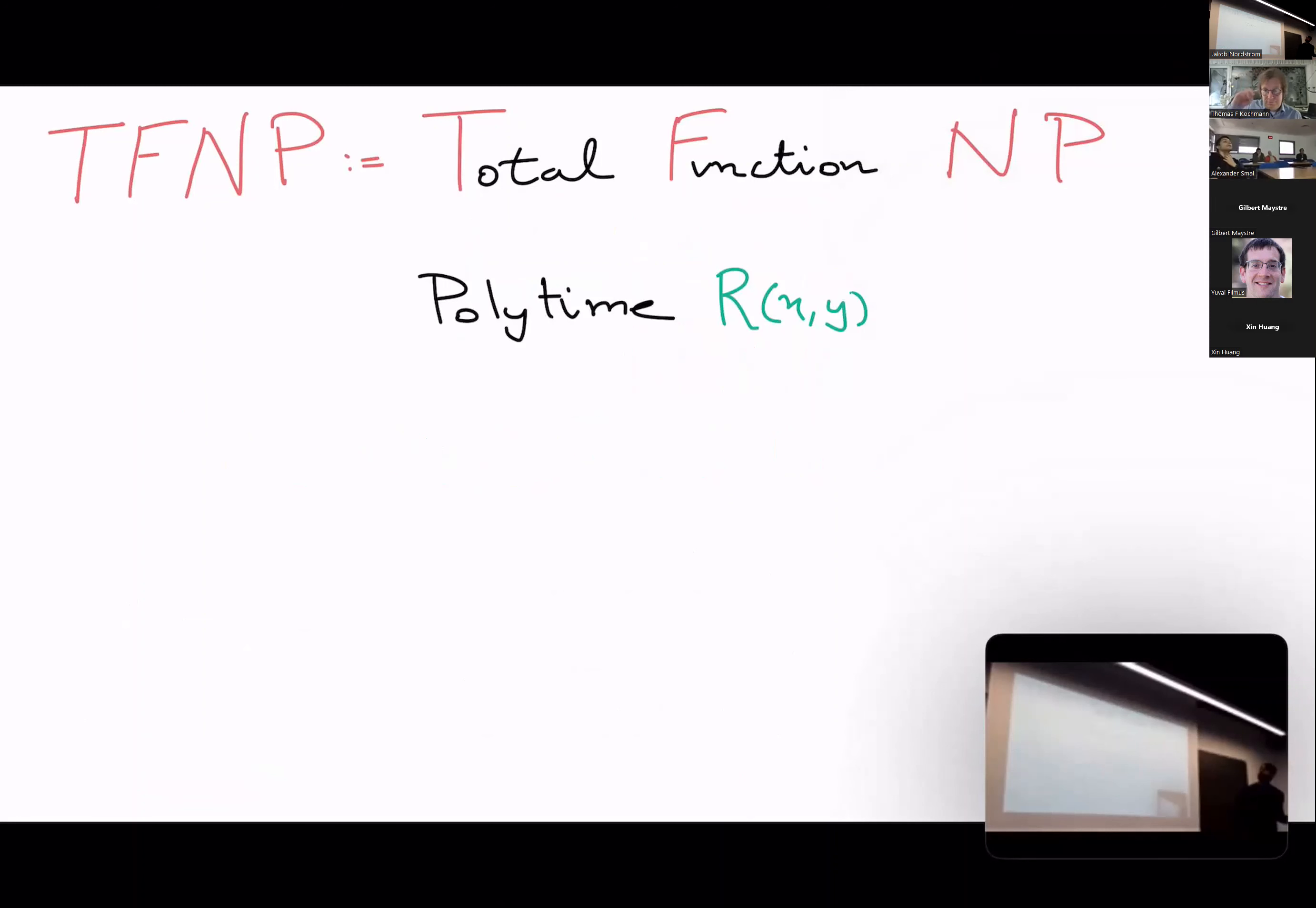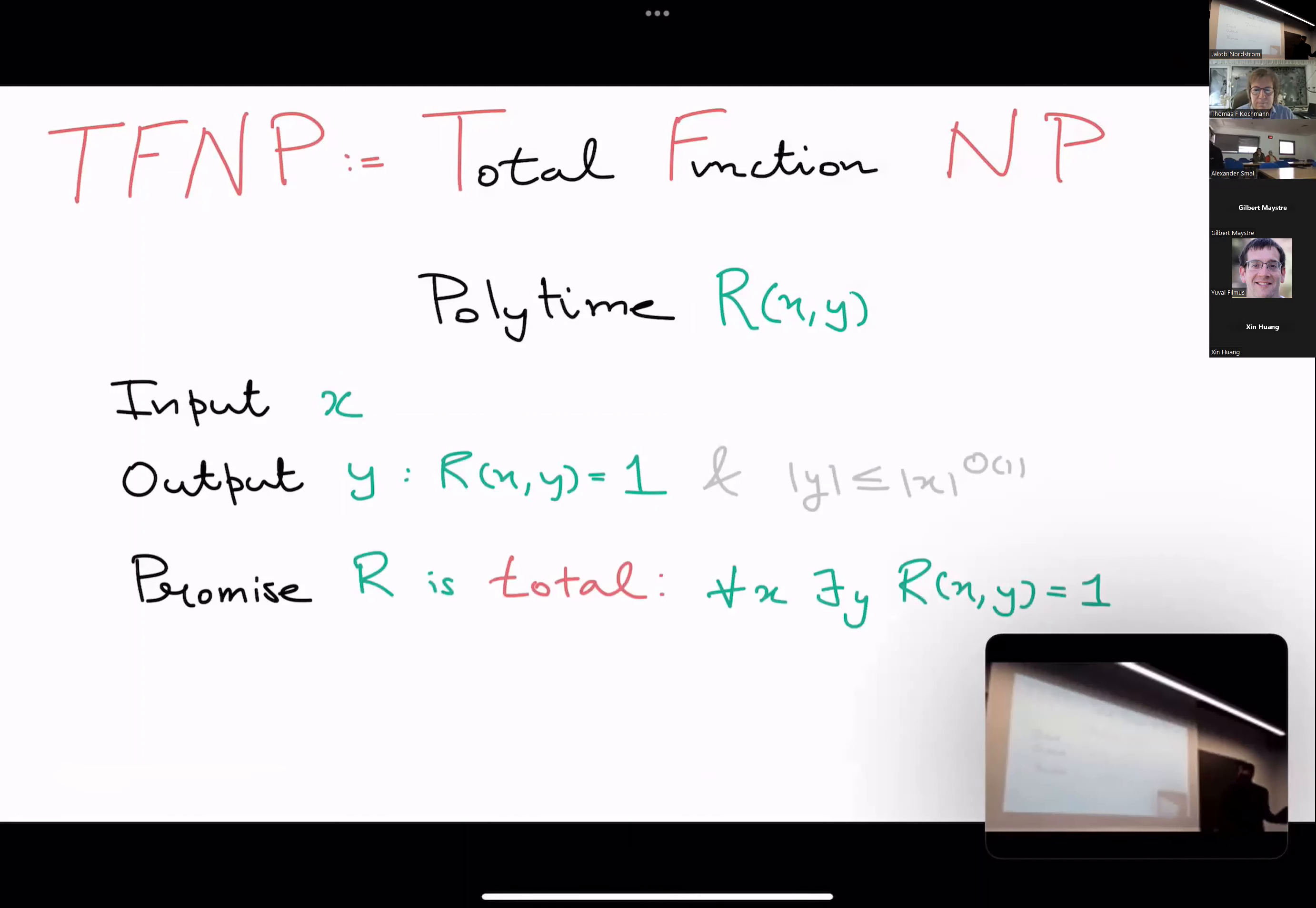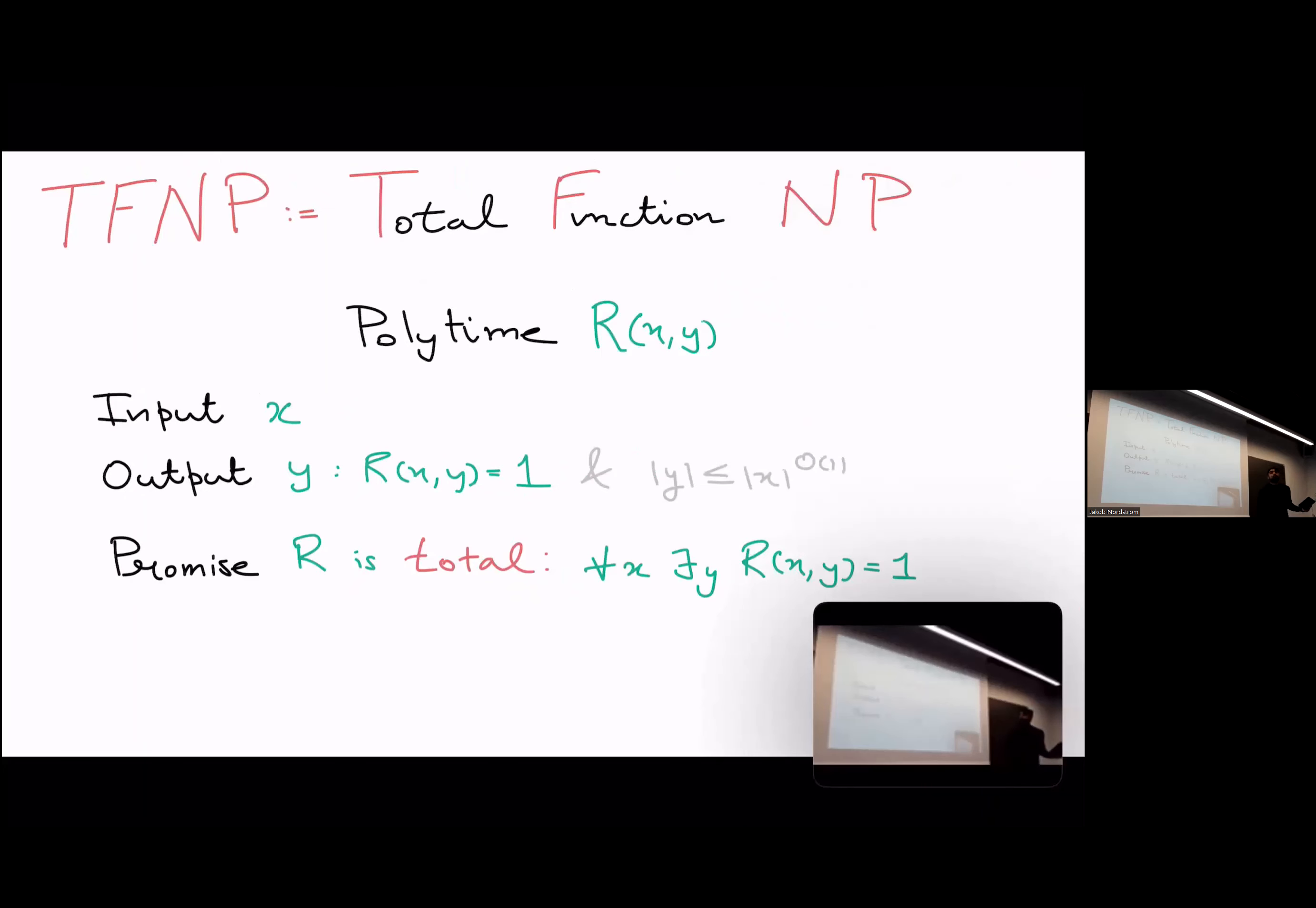These are search problems which are verifiable, which means that you're given a polynomial relation on inputs X and Y, where you're given an input X and you want to output some Y such that this pair is in the relation.